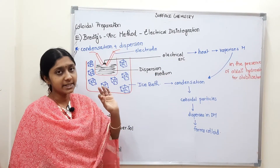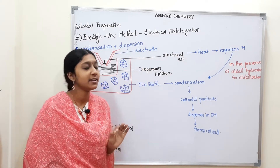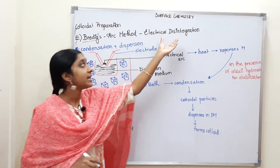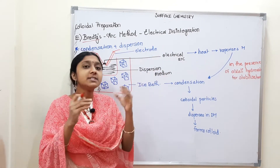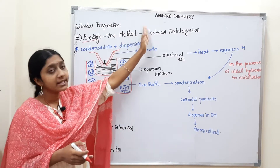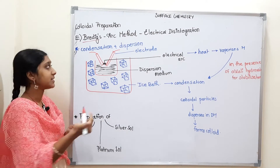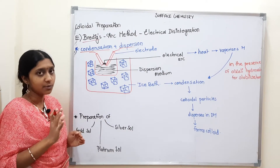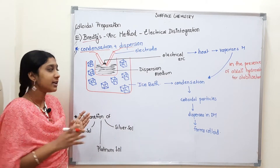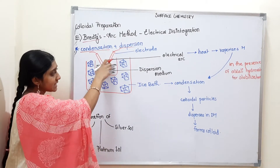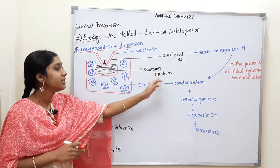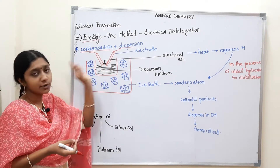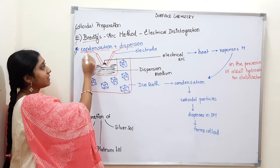Next, we will talk about Bradic's Arc Method, also known as Electrical Disintegration. We use an electrical arc to disintegrate the metal. The setup involves an ice bath — we fill it with ice and place a small container with dispersion medium inside. We insert two electrodes made of the metal we want as a colloidal solution, and connect the external circuit.